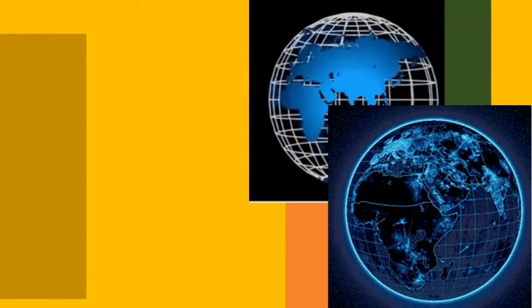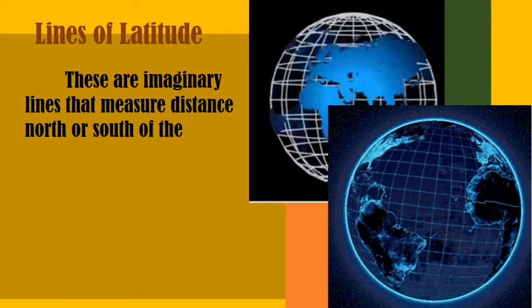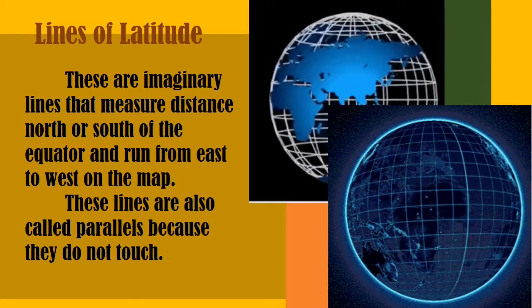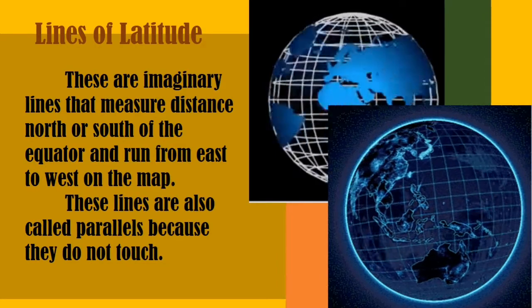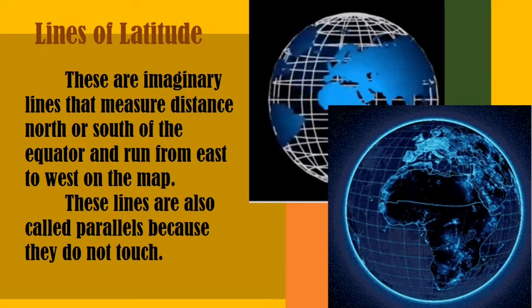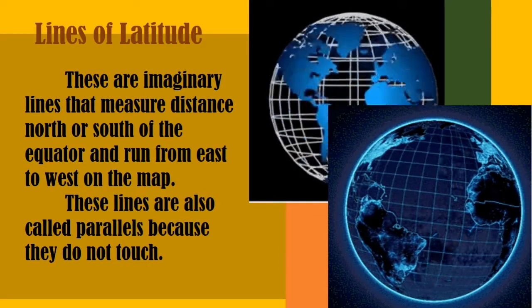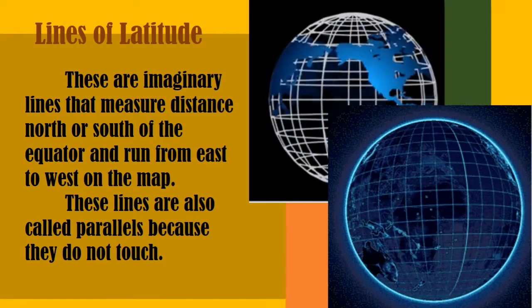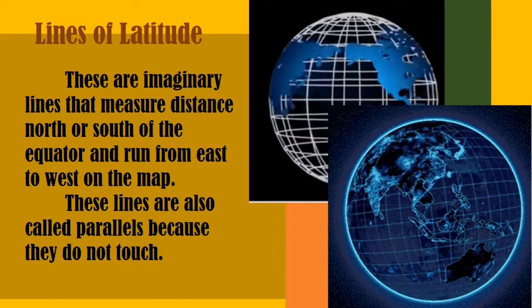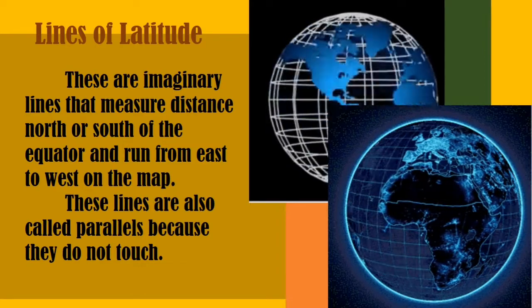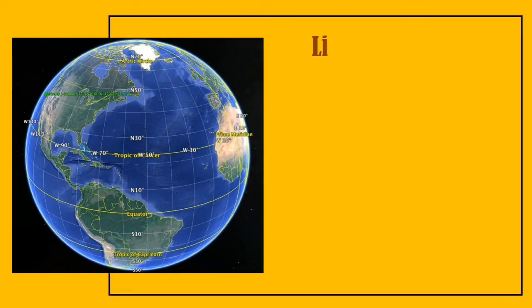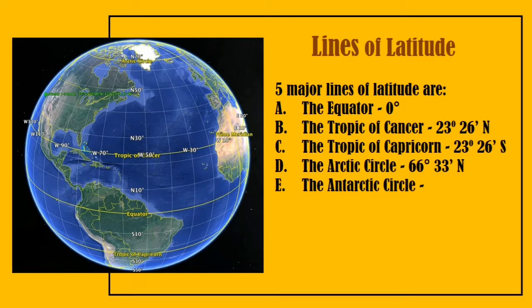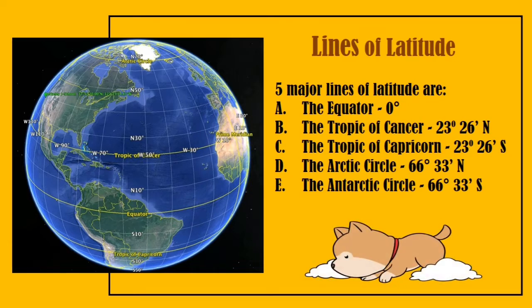Next are the lines of latitude. These are actually imaginary lines that measure distance north or south of the equator and run from east to west on a map. These lines are also called parallel lines because they do not touch.